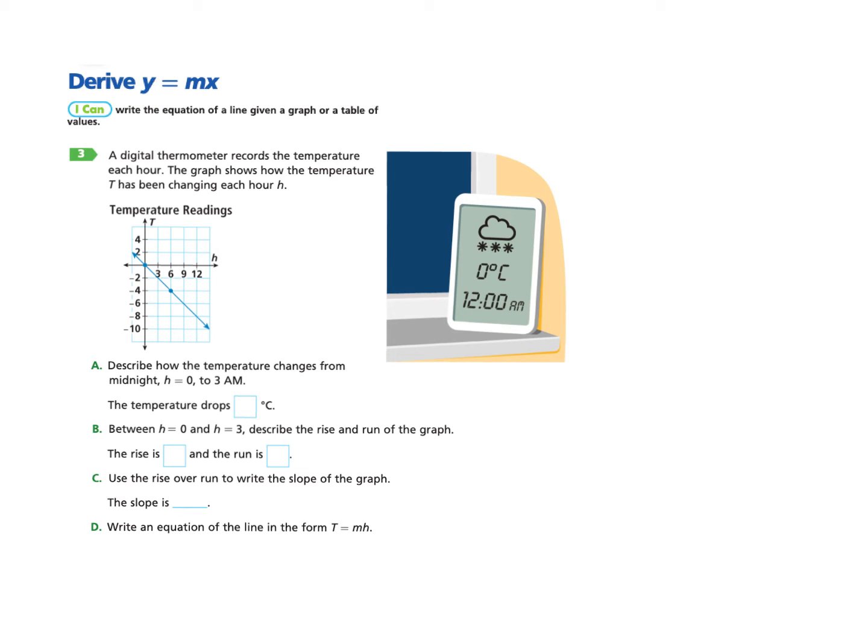Y is our output value, X is our input. So now in this problem, T is the output, X is the input. And then we have a few values here. Now the first question is describe how the temperature changes from midnight, which is H equals 0 to 3 AM. So I'd encourage you to pause the video for just a second, and think about the question, kind of read through the graph again, and just try to answer that first question, and then restart the video when you're done with part A.